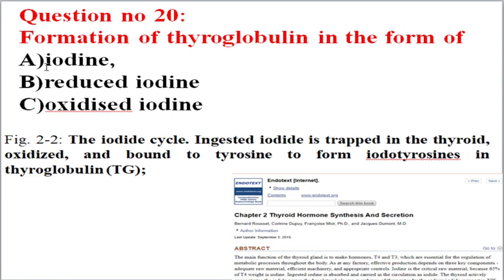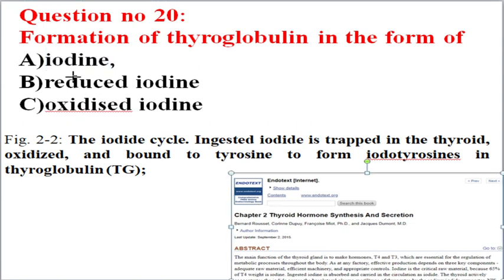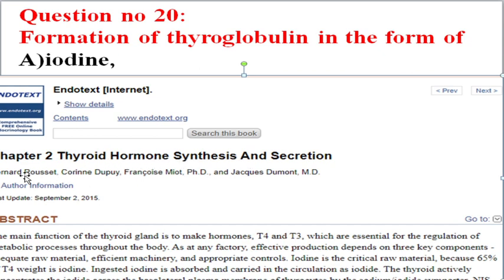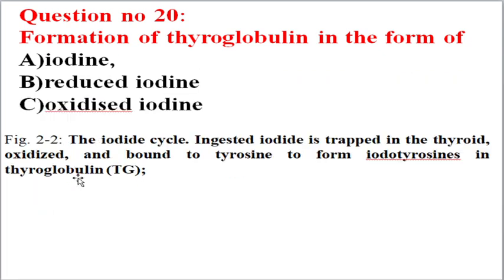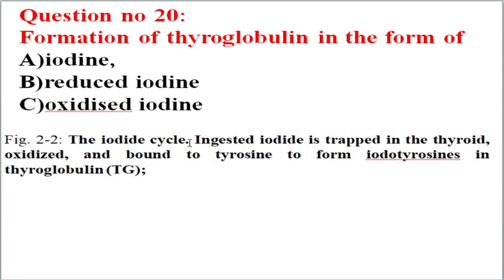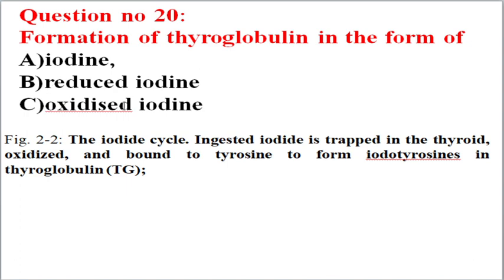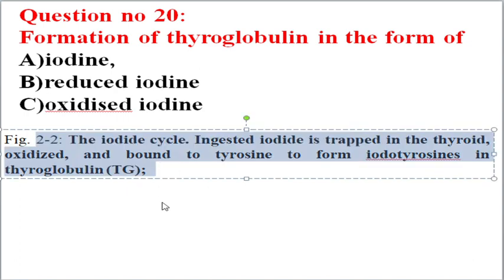The next question concerns the formation of thyroglobulin and which agent is involved — iodine, radioiodine, or oxidase iron. Refer to the book on thyroid hormone synthesis by Bernard Rossetti published in 2015. In Figure 2.2, which is a PubMed article, the entire iodine cycle is given. The ingested iodine from dietary salt is trapped in the thyroid gland and goes through oxidation. Thyroglobulin is formed from oxidized iodine, not reduced iodine.